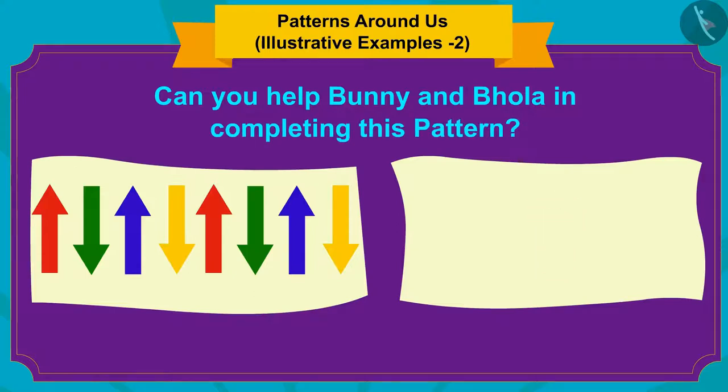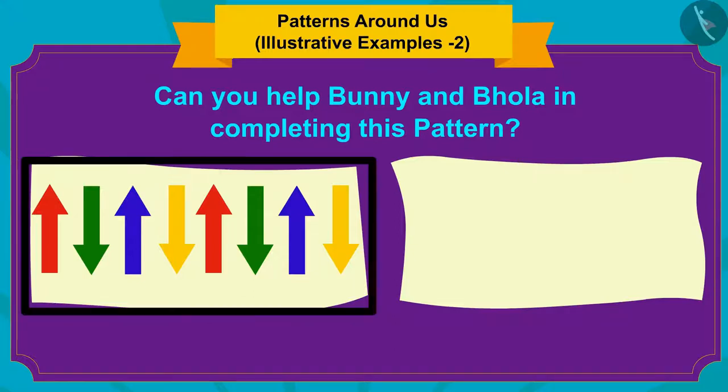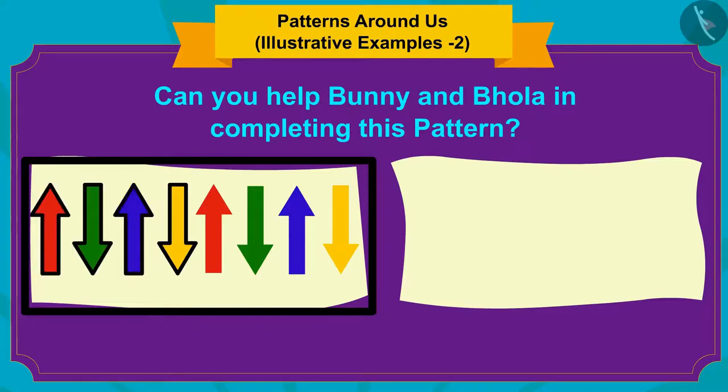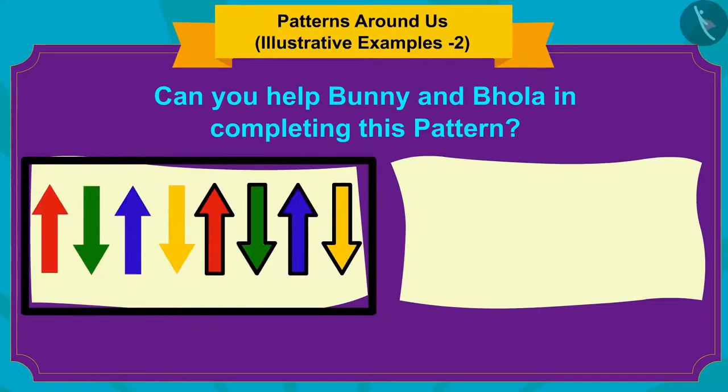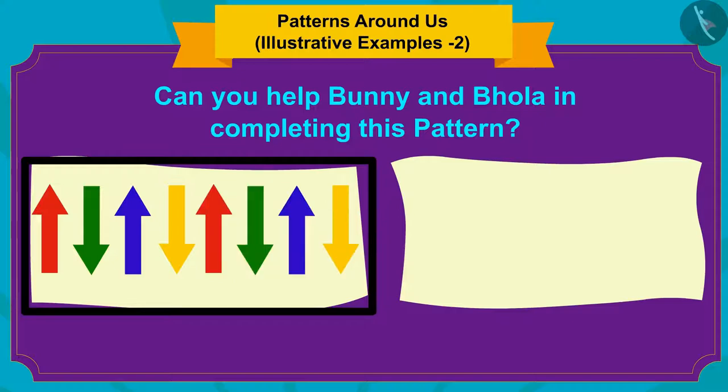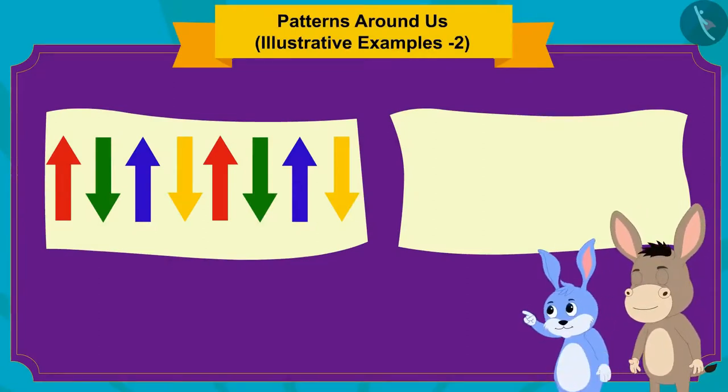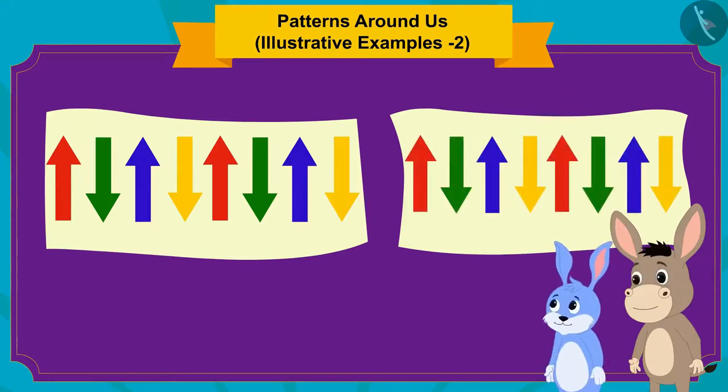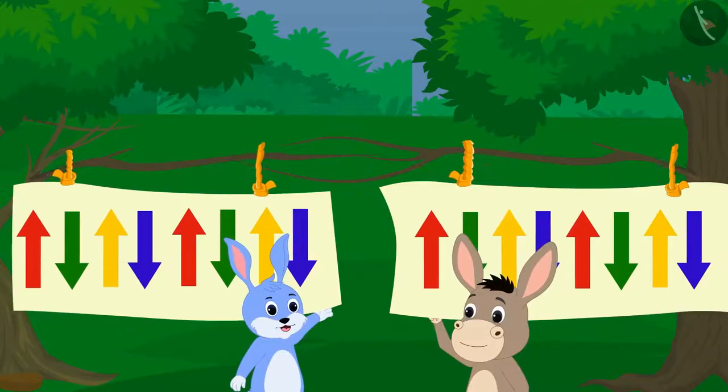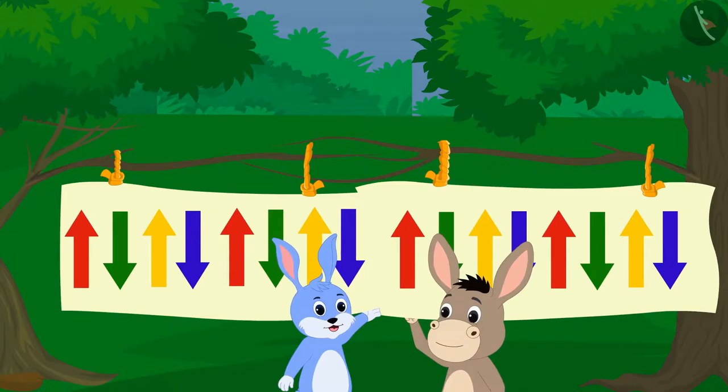Well done! Your answer is absolutely correct! Here, in the pattern of the curtain, a group of such red, green, blue and yellow arrows is repeated, thereby making the pattern. Bhola and Banni made this pattern on the other side of the screen with your help and then pulled the two curtains closer and completed the pattern.